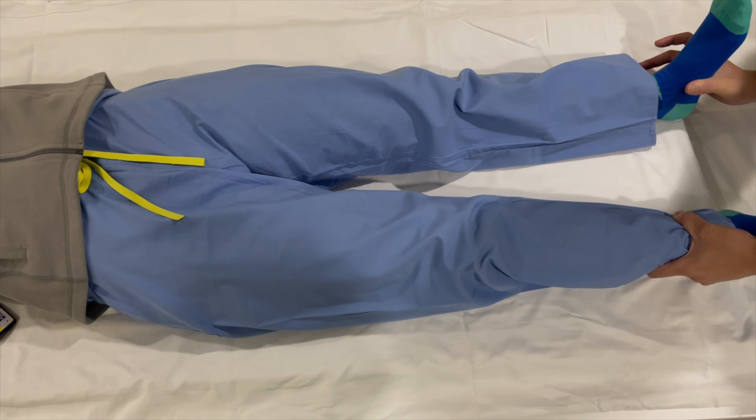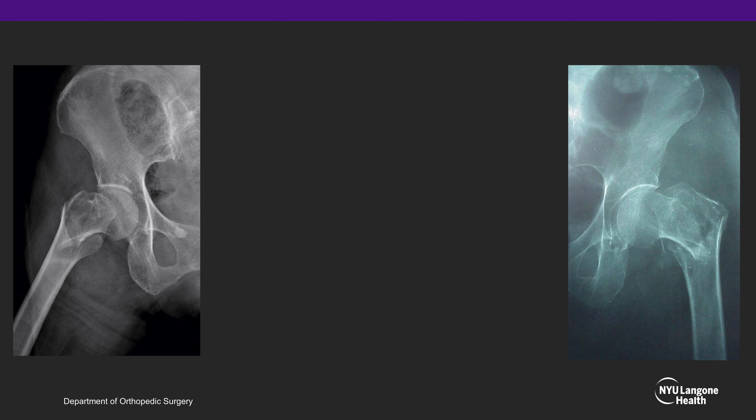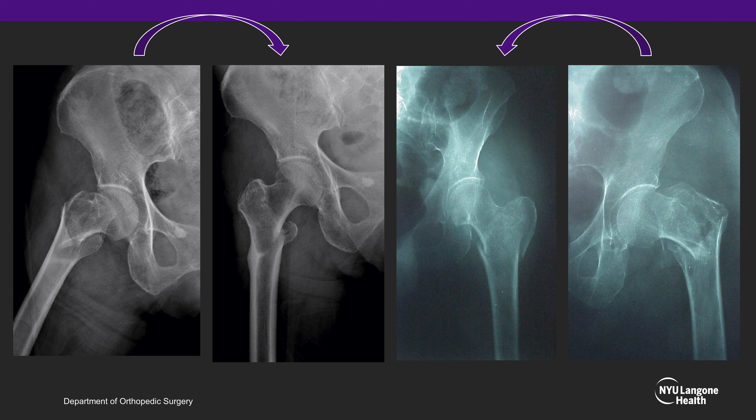The following are examples of two AP hip x-rays in external rotation and shortening. Once traction and internal rotation is applied, the fracture patterns for each can be much better appreciated. The patient on the left was seen to have a reverse obliquity atypical hip fracture near the subtrochanteric region, and the patient on the right was seen to have a reverse obliquity intertrochanteric femur fracture. Both underwent operative repair of their hip fracture with a long cephalomedullary nail.